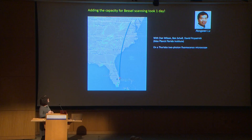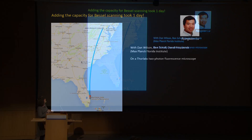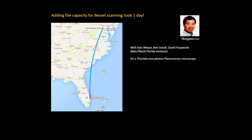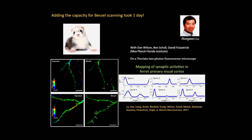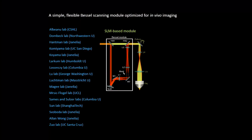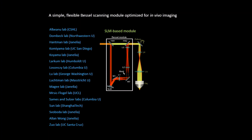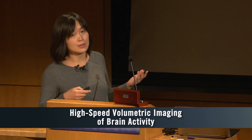One thing that makes this technique very powerful is that it is easy to add to an existing microscope. My postdoc Rongwen flew to the Max Planck Florida Institute and it took only one day to install a Bessel beam scanning module on a commercial microscope in the David Fitzpatrick lab. Since we published the results, we have been helping multiple labs implement this method. In doing so, we realized two limitations of our original implementation: cost — the spatial light modulator is about $25,000 — and space, since it is difficult to fit an SLM-based module into compact commercial microscopes.